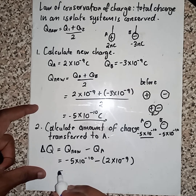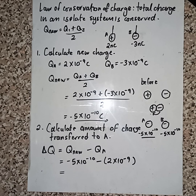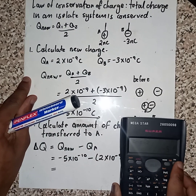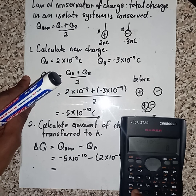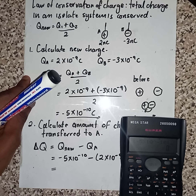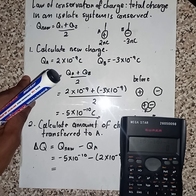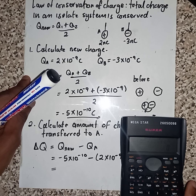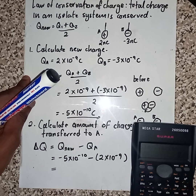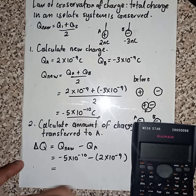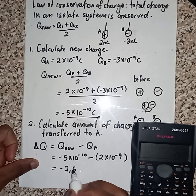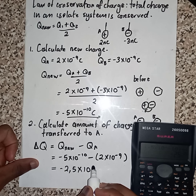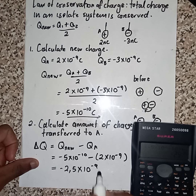At this point we use the calculator: negative 5 times 10⁻¹⁰ minus 2 times 10⁻⁹. We get negative 2.5 times 10 to the power of minus 9 Coulombs for charge A.